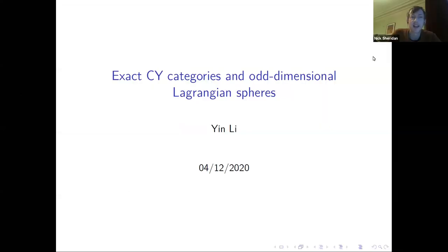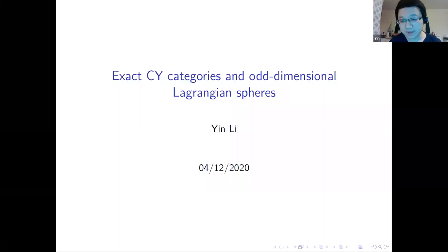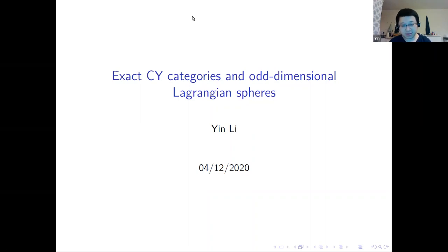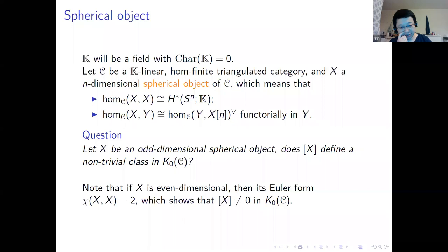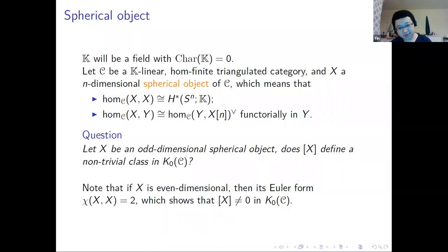This talk is about Calabi-Yau structures and their applications in symplectic topology, specifically concerning spherical objects in triangulated categories. Let k be a field of characteristic zero, and let C be a k-linear homologically finite triangulated category. A spherical object in this triangulated category is one whose Hom-space is isomorphic to the cohomology of an n-dimensional sphere and which satisfies Poincaré duality.